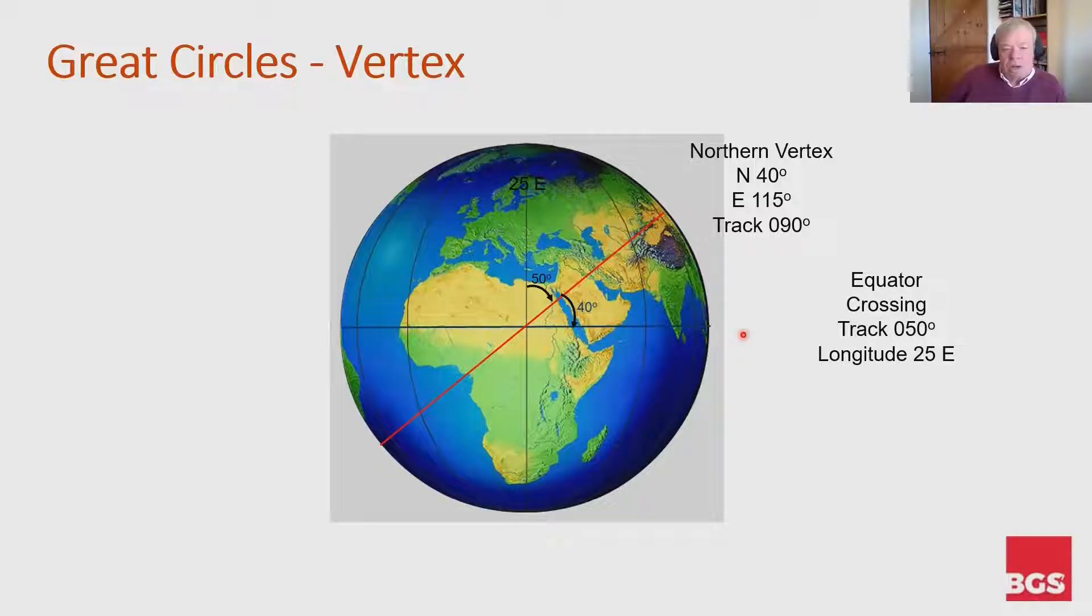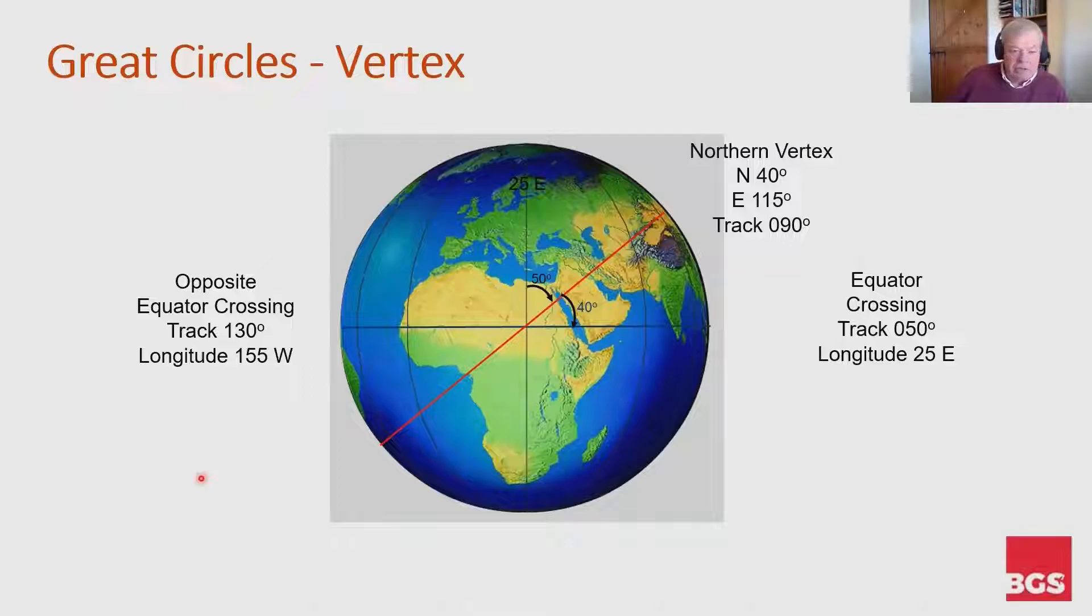So at that northern point, the track will either be 090 or 270, and the direction we're going is in the easterly direction, so it's 090 at that point. What happens then is it starts to go down the other side of the earth and when it crosses the equator at the opposite side, its track will be 130.